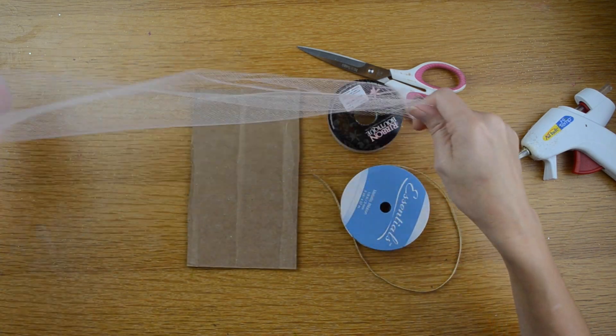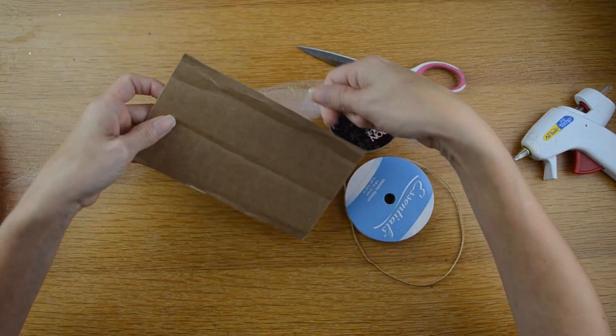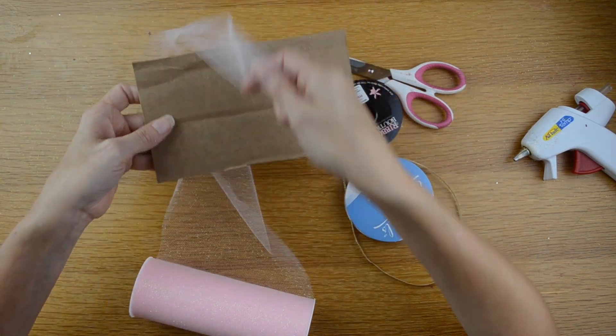Now I'm going to take my tulle and I'm going to bunch it up like this and I'm going to start wrapping it around the cardboard and you want to wrap it around about 15 times.